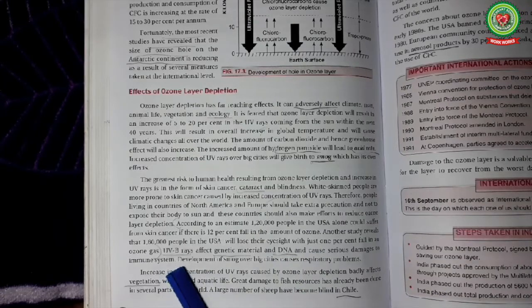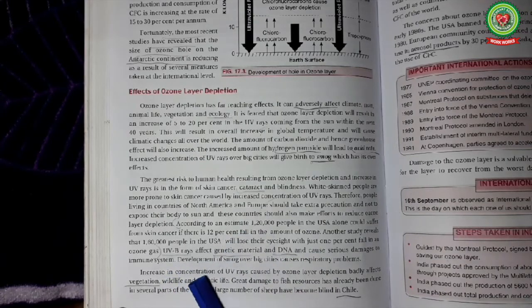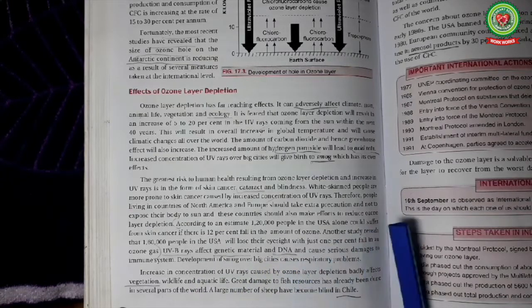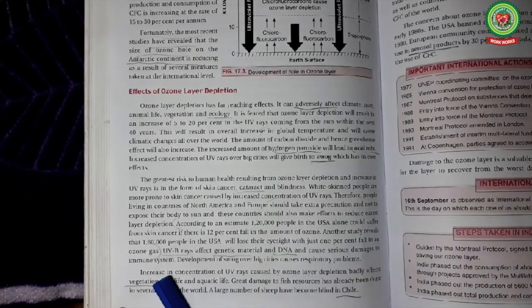The ultraviolet rays can also affect the genetic material and DNA, thus they can cause damage to the immune system.